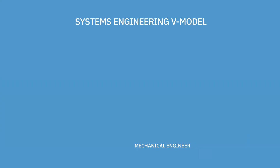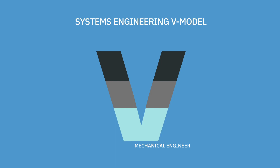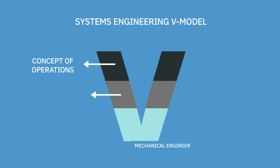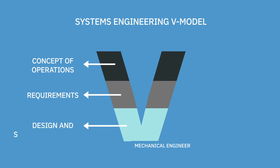Next up, systems engineering — the big picture. One main goal and objective that systems engineers use is called the systems engineering V-model, formed like a V. Starting at the top is the concept of operation: how do things work, what's your idea, what are you trying to accomplish, what are the needs? This is followed by requirements — things that your project must have in order to work properly, or in order to work the way you want.